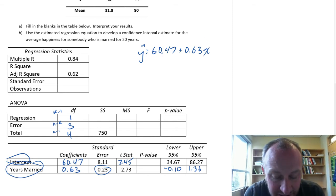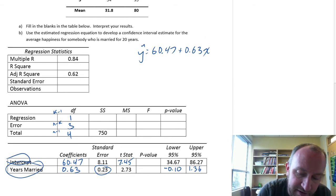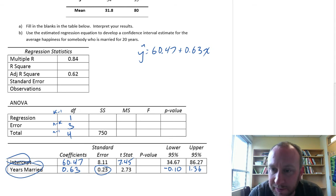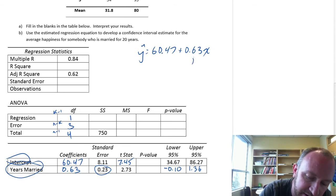y-hat equals 60.47 plus 0.63x, where x is years of married and this is happiness.